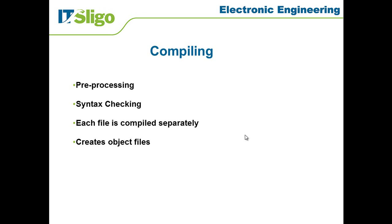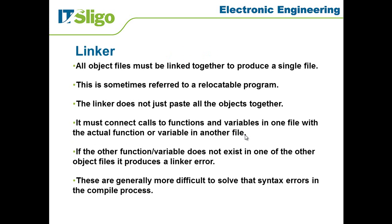What occurs then with all these separate object files — and indeed a library of object files that the compiler has itself — is that they all have to be linked together to produce a single file. This is sometimes referred to as a relocatable program or relocatable program file. What it does is create one file or one program, and it's relocatable — I'm mentioning that now because on the next slide we'll be talking about the locator.